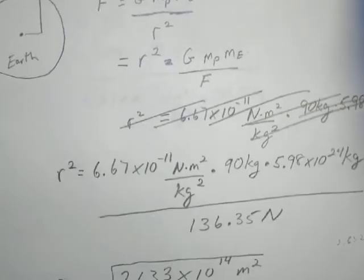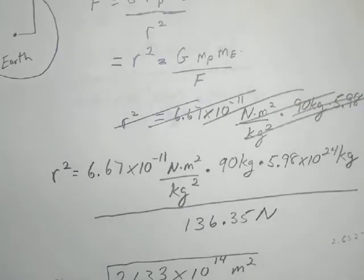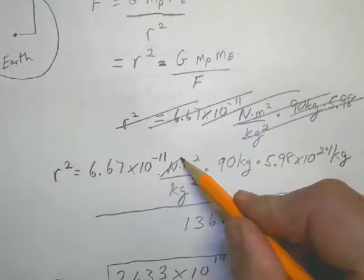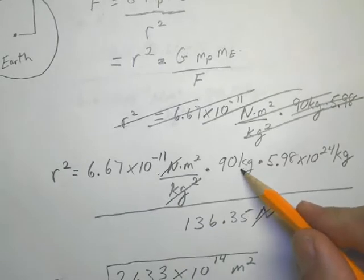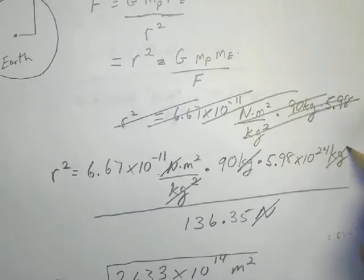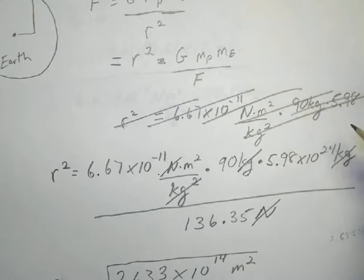So if we look at our units here, they're going to cancel out. The Newtons up here is canceled out by the Newtons down here. Kilogram squared is canceled out by this kilogram and this kilogram. So kilogram squared divided by kilogram squared, and you're going to be left with an R squared of meters squared.